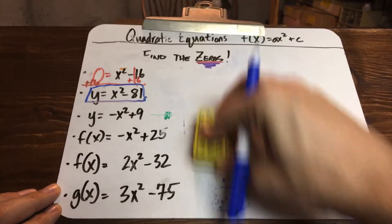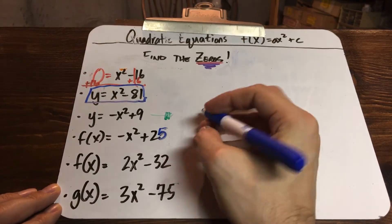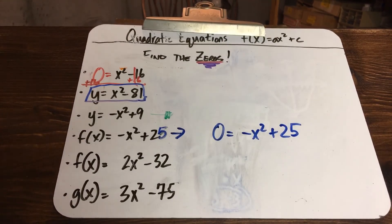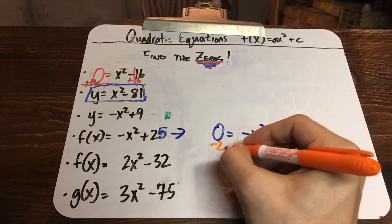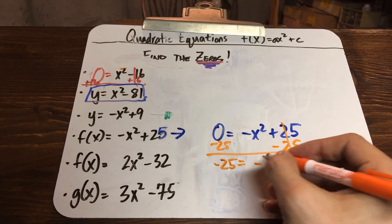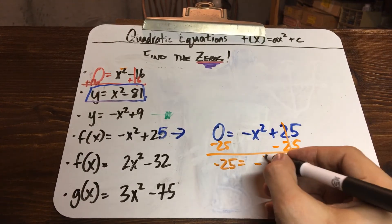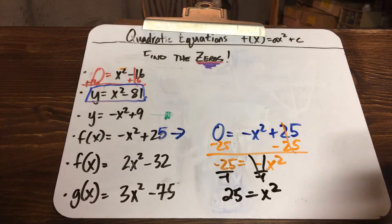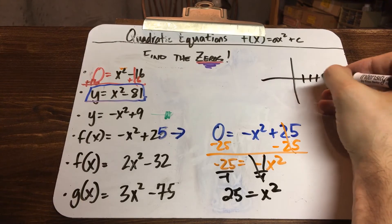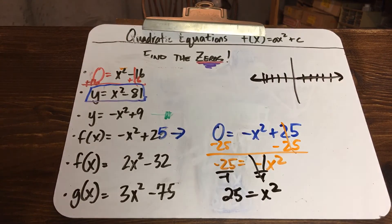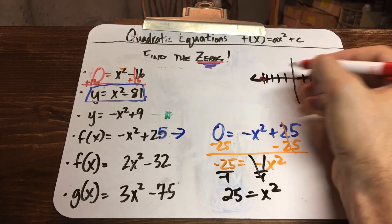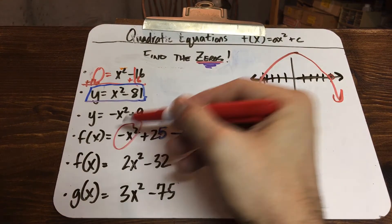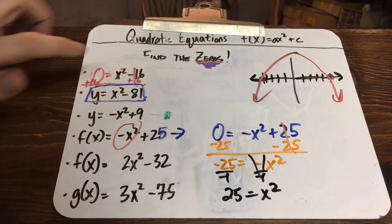For the next question with negative x squared minus 25: replace f of x with zero, then do minus 25 on both sides. Divide by negative 1 — negative divided by negative is positive — giving you 25 equals x squared. That's 5 and negative 5. So this graph has x-intercepts at 5 and at negative 5, and since it had a negative coefficient it opens downward.